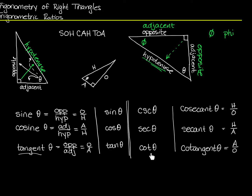Mathematicians decided that C-S-C would stand for cosecant. Notice that sine is opposite over hypotenuse, and if you go across to cosecant, you get hypotenuse over opposite. Cosine is adjacent over hypotenuse, and secant is hypotenuse over adjacent. Tangent is opposite over adjacent, and its partner — cotangent — is adjacent over opposite.